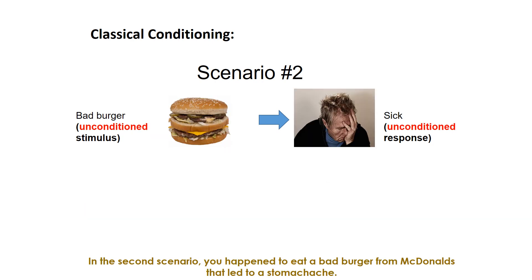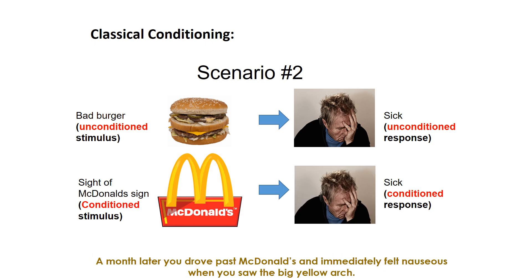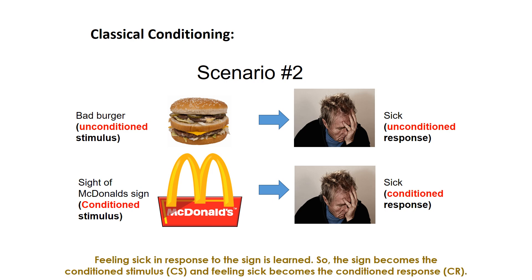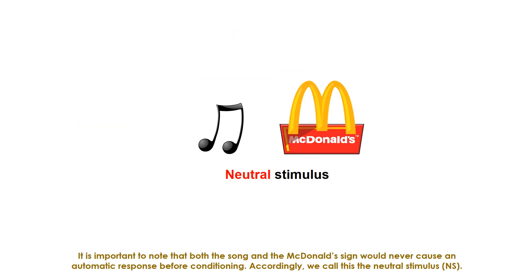In the second scenario, you ate a bad burger from McDonald's that led to a stomachache. Bad food will automatically cause sickness, so the burger is the unconditioned stimulus and the stomachache is the unconditioned response. A month later, you drove past McDonald's and immediately felt nauseous when you saw the big yellow arch. Feeling sick in response to the sign is learned, so the sign becomes the conditioned stimulus and feeling sick becomes the conditioned response. Classical conditioning has occurred. It is important to note that both the song and the McDonald's sign would never cause an automatic response before conditioning — accordingly, we call this the neutral stimulus.